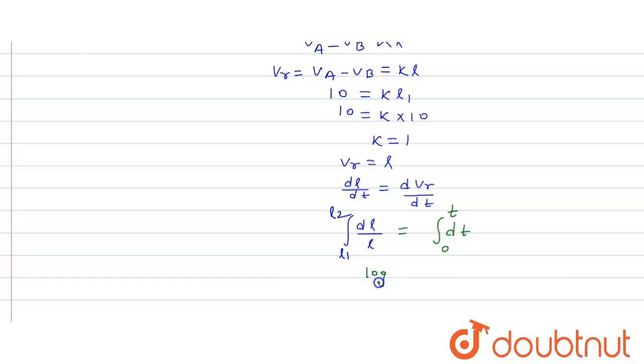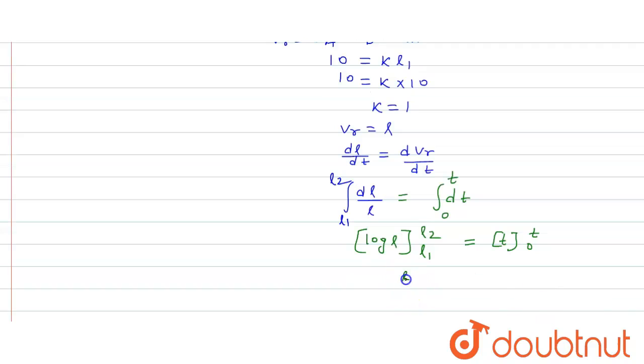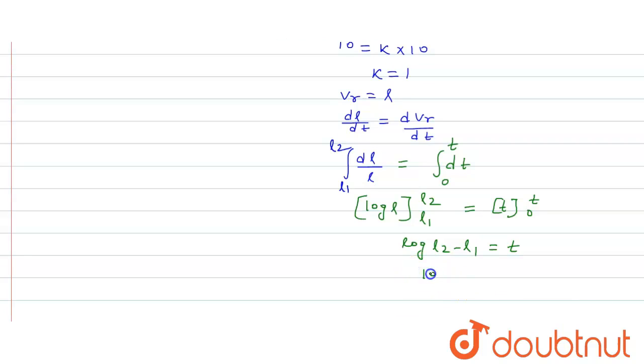This will be log L with limit from L1 to L2 equals T with limit 0 to T. So from here log L2 minus log L1 equals T. So from here log L2 by L1 equals time T.